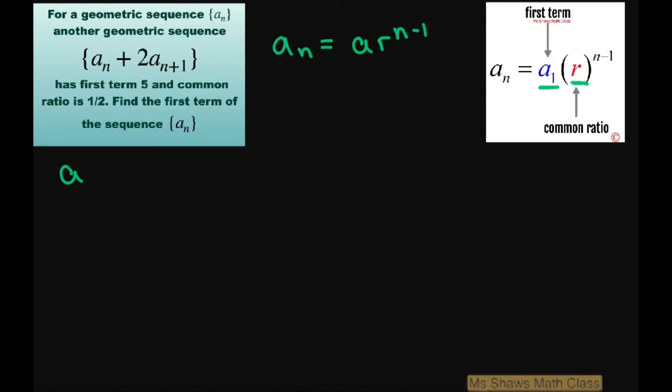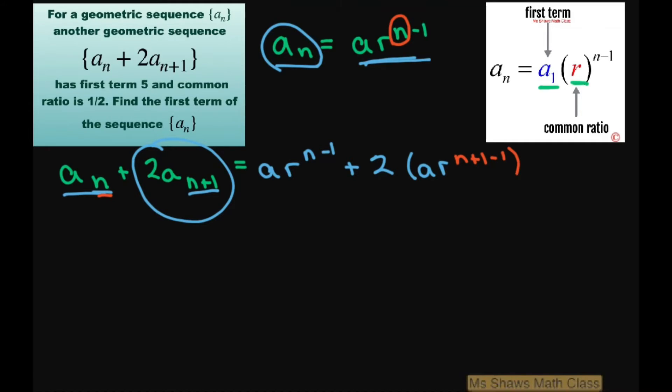Now we're going to write our other sequence as a sub n plus 2a sub n plus 1. We're going to substitute the formula for a sub n. For this one, we're just going to write a times r to the power of n minus 1. Plus for this one, we're also going to substitute. This will be 2 times a times r, and we have n plus 1, not n. So everywhere there's n, we're going to put n plus 1. So we have n plus 1 for our n here and then subtract 1.